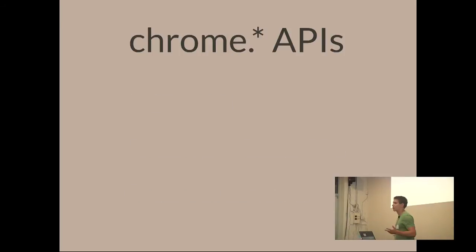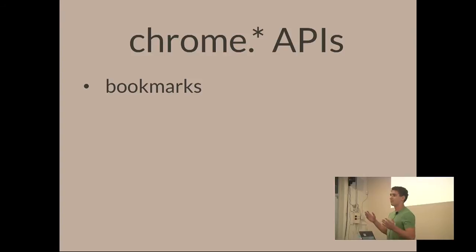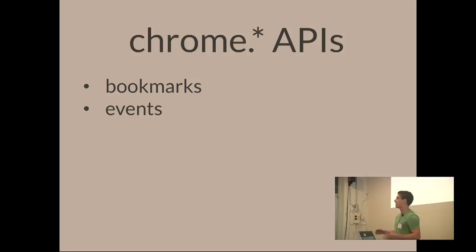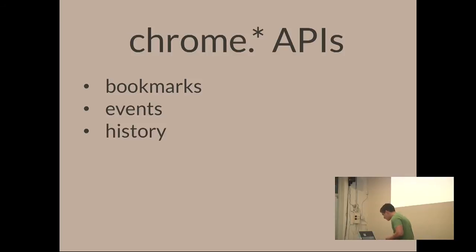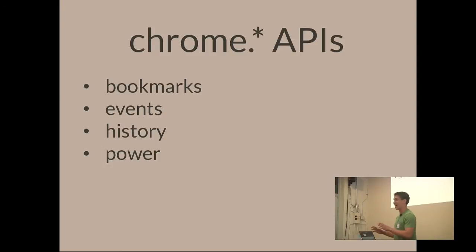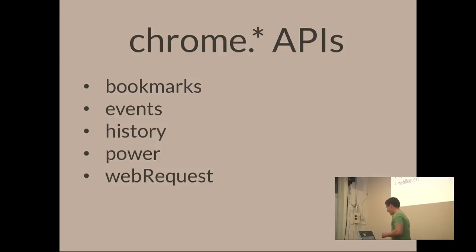Here are some examples of the Chrome APIs. There's a Bookmarks API so you can view or edit bookmarks in Chrome. There's an Events API that's part of every API — for example, on Bookmarks you can trigger code whenever a user bookmarks something, removes a bookmark, or changes a bookmark. There's also a History API so you can view or modify the user's history.